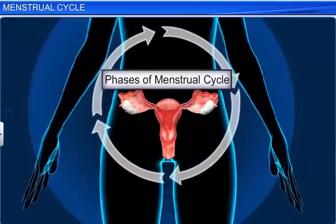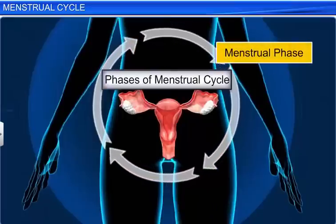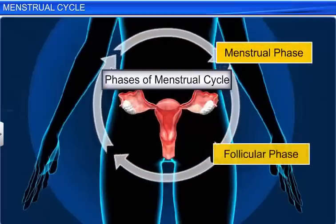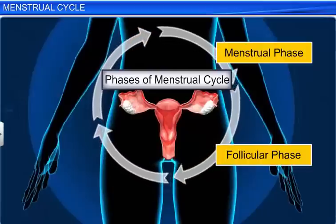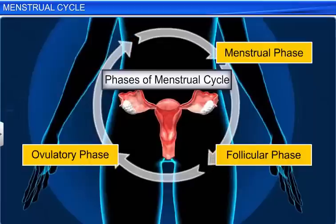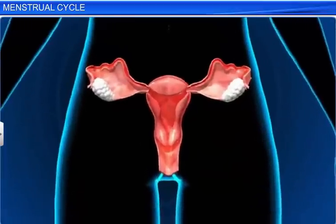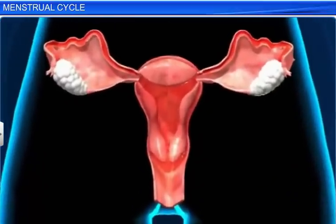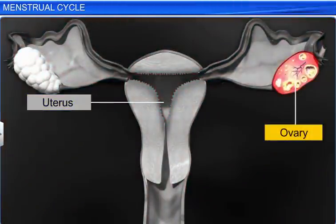A single menstrual cycle consists of four phases: the Menstrual phase, the Follicular or Proliferative phase, the Ovulatory phase, and lastly, the Luteal or Secretory phase. Each phase of the menstrual cycle is marked by simultaneous changes in the uterus, ovary, and the secretion of hormones.